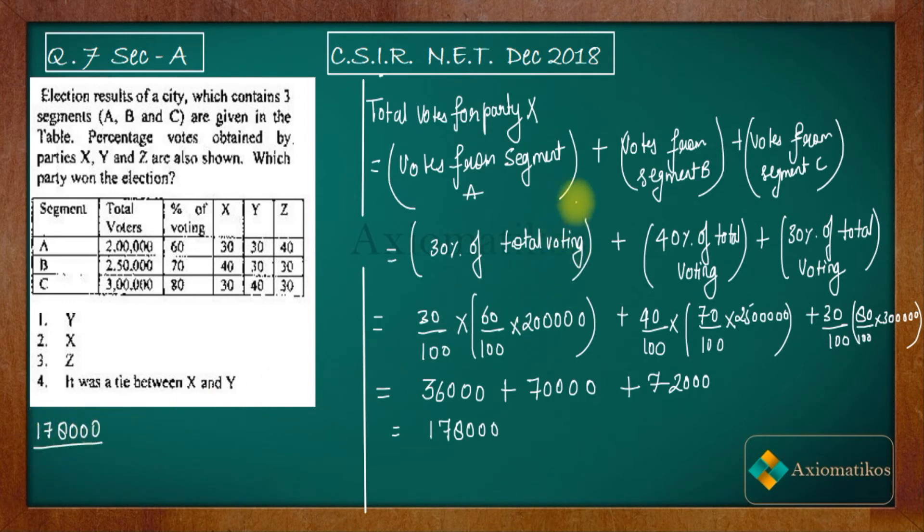Now the same thing you will do for party Y. So if I replace this with Y, what is the percentage of voting for Y? 30% of this 60, so this thing will be the same. Now 30%, so this thing instead of 40 is going to be 30 now. And instead of this 30 you are going to have 40%.